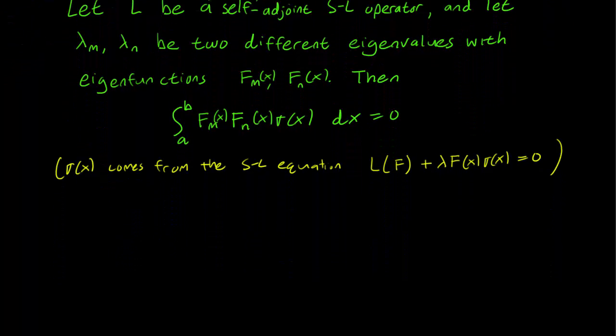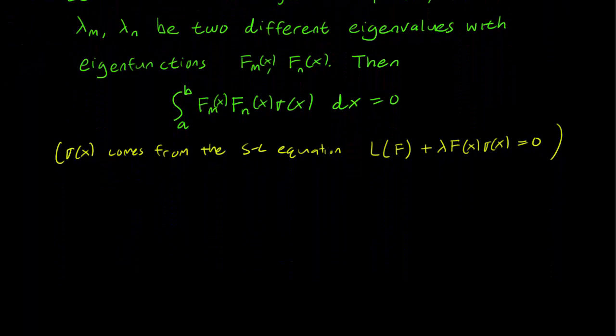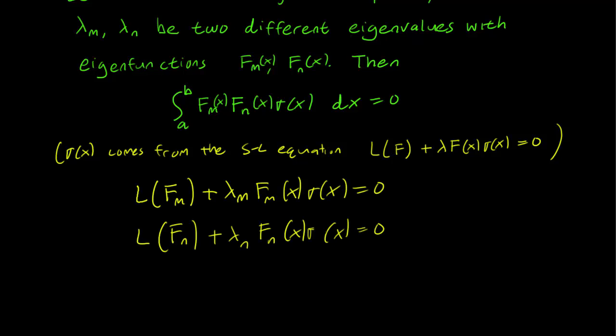So here is how we're going to use self-adjointness. First we write down our properties. We have two eigenvalues lambda_m and lambda_n, and we write down the Sturm-Liouville equation for both of them. Let us label the first equation 1 and the second equation 2.